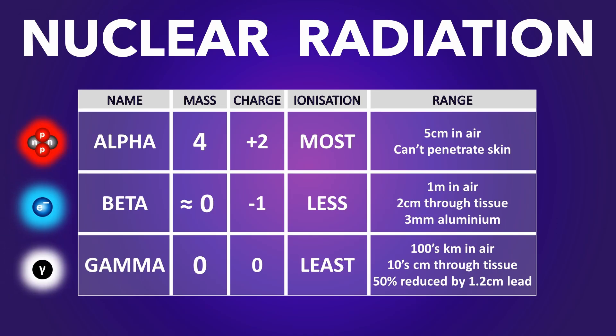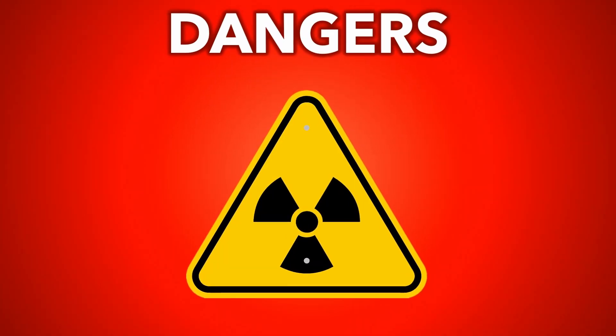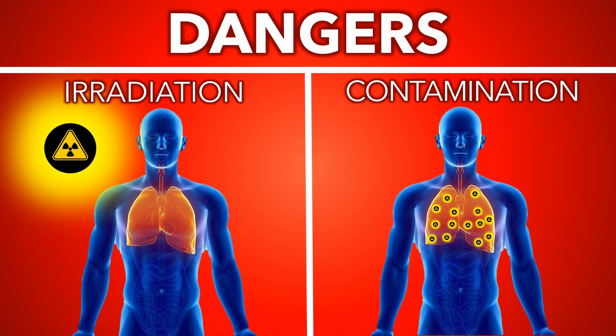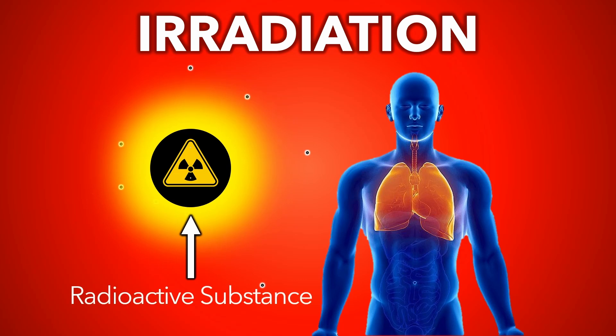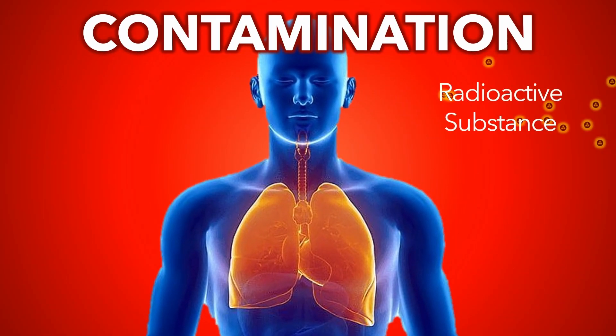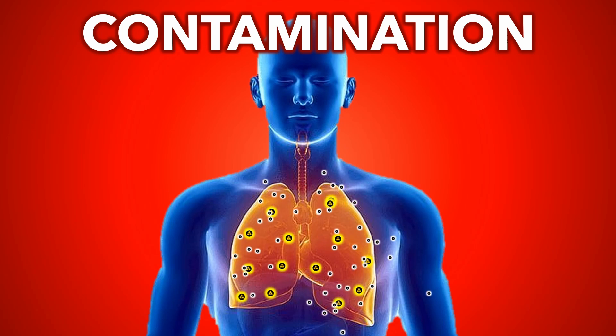Here's a summary of the three types of nuclear radiation. Now, what are the dangers? There are two types of danger. Firstly, irradiation, when the radioactive source is outside your body, or contamination, when the radioactive source is inside your body.